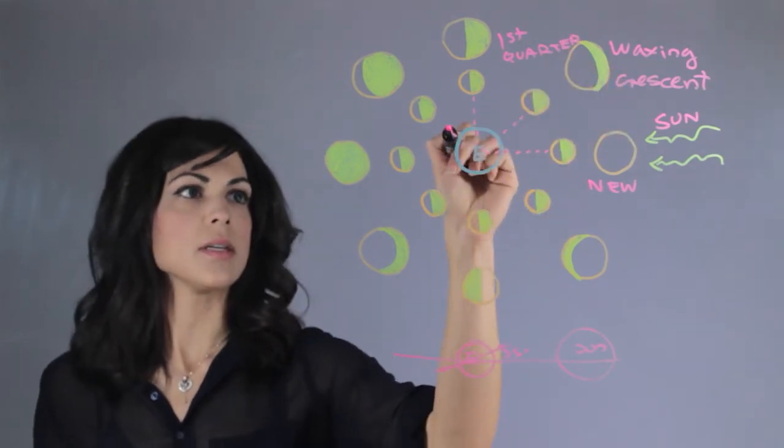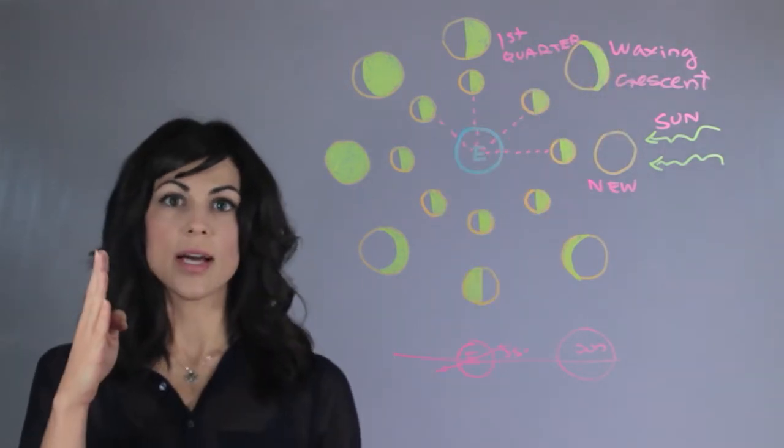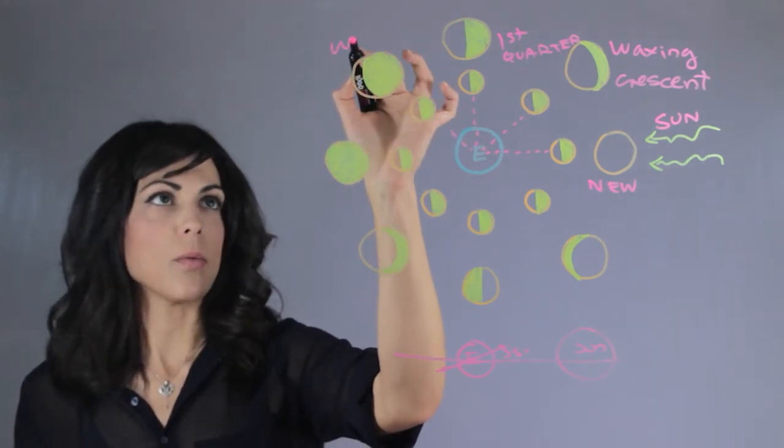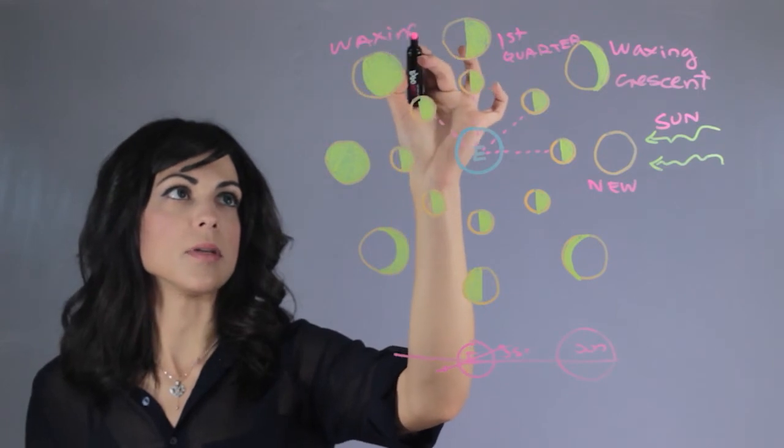So what happens next is that we're seeing most of the side that's lit with a little bit of darkness in it and this is the waxing gibbous.